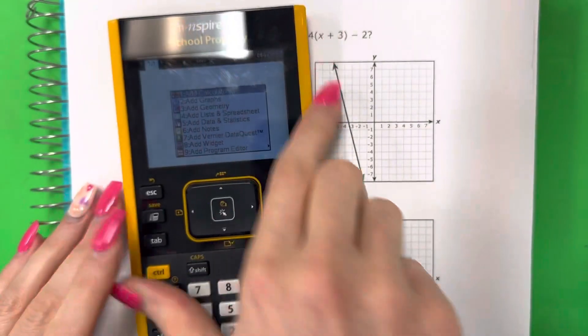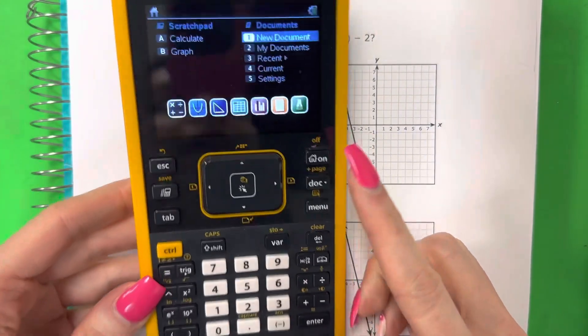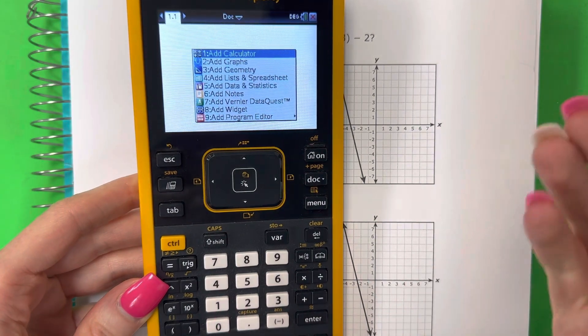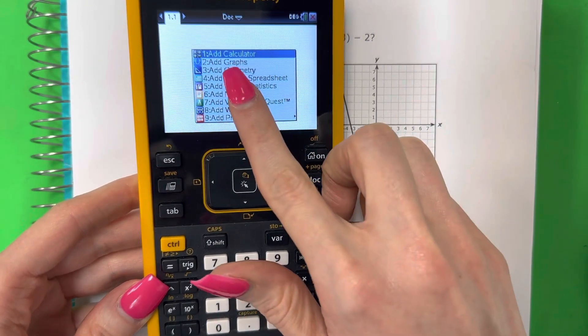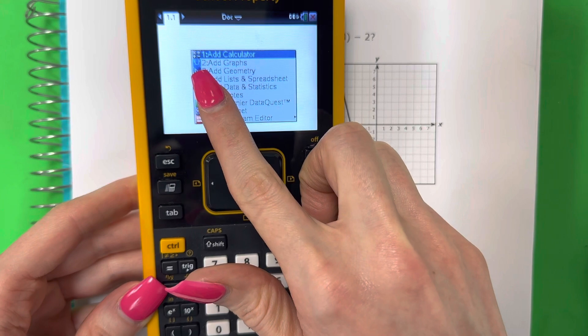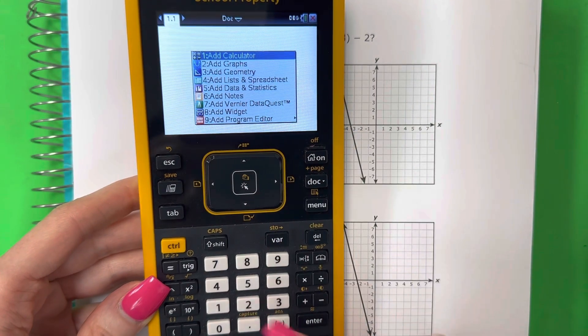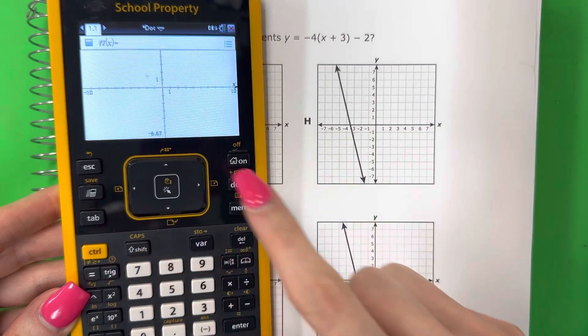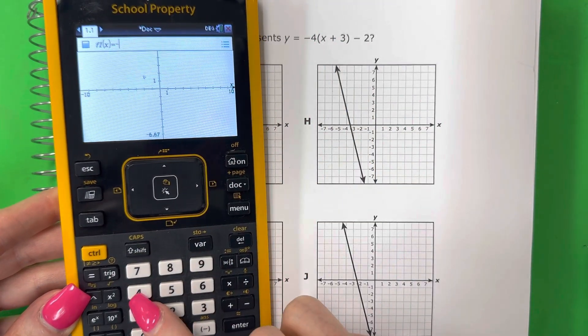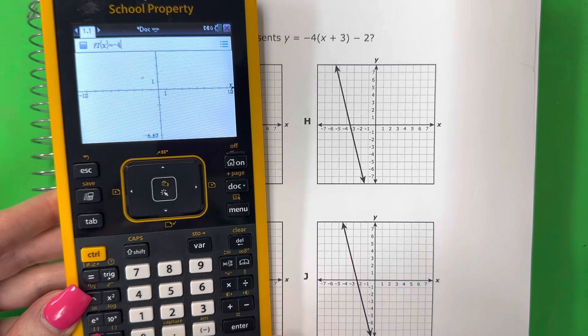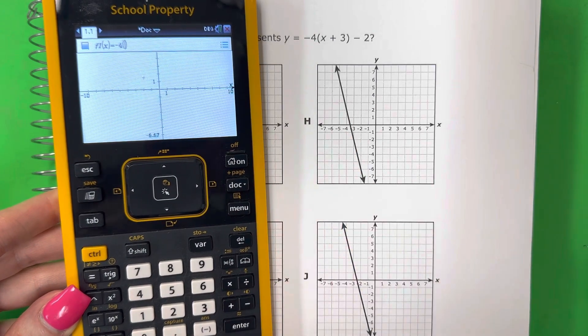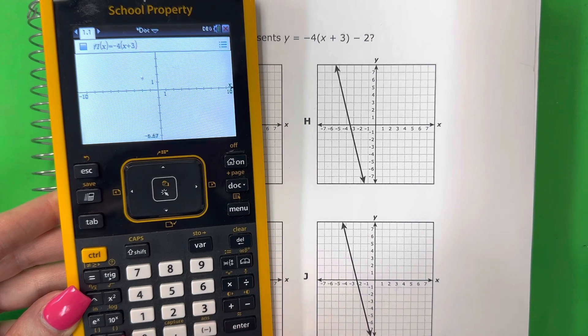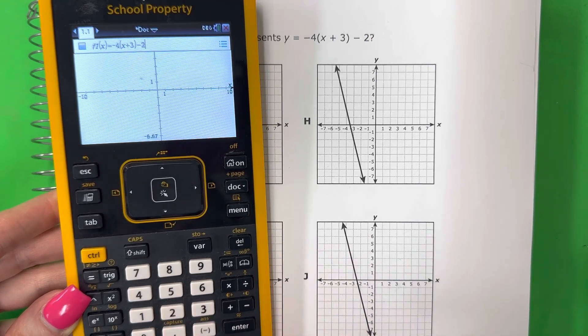Go ahead and get your calculator. Push 1, 1, and then push no if you need to. We're going to enter into the graphs, number 2. Numero 2. We're going to put this equation in the calculator. So, negative 4, open parentheses,